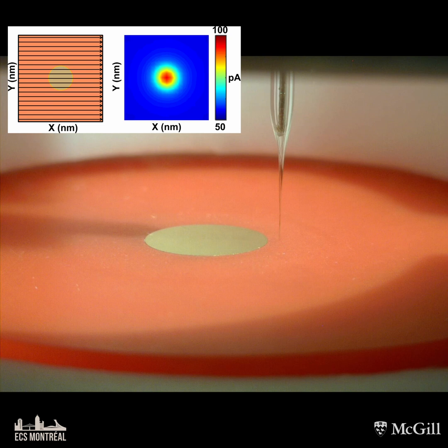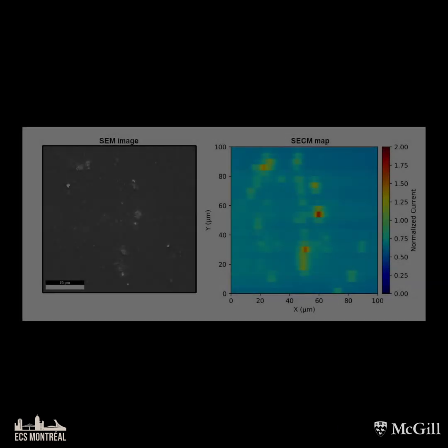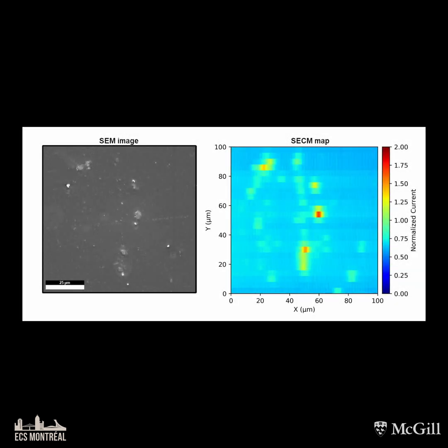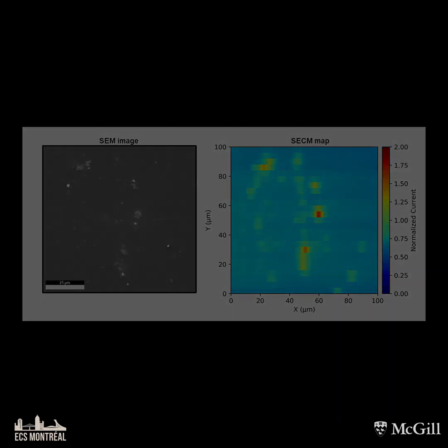You can find more information about SECM operation modes in the link below. The next image is an example of an SECM map obtained using an aluminum alloy as a substrate. You can see in the map that the hotspots match with specific microstructural features, whereas the blue areas are related to the matrix of the alloy. This difference in reactivity may be a first indication of microgalvanic coupling mechanisms.